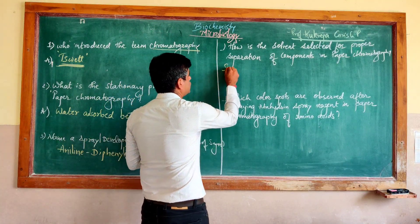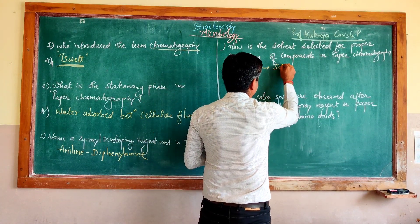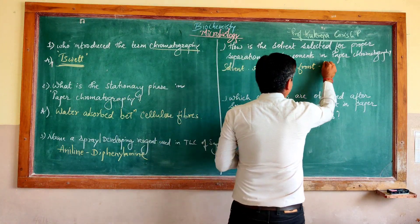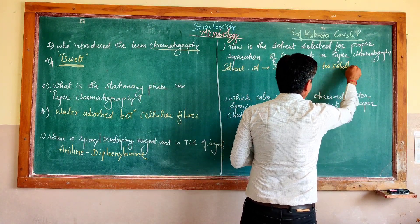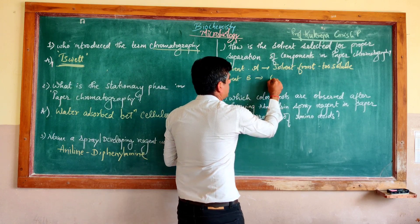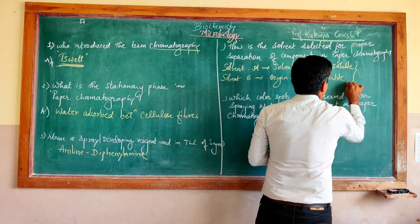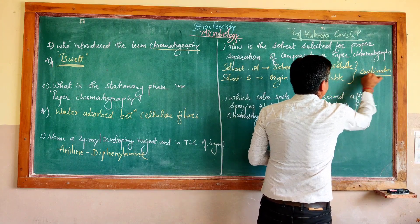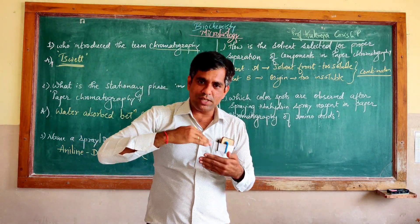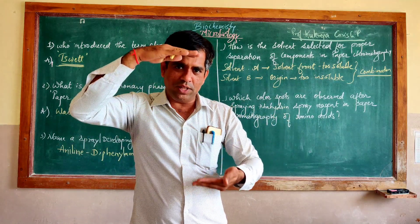For example, if you have solvent A and use it for separation, you may find that most components move toward the solvent front — meaning they are too soluble in that solvent. With solvent B, most components stay near the origin, meaning they are too insoluble. So you use a proper combination: a mixture of solvent A and solvent B will give a better resolution, properly separating the components.